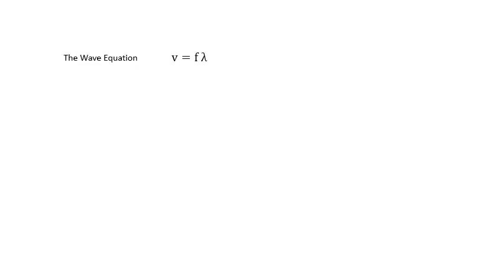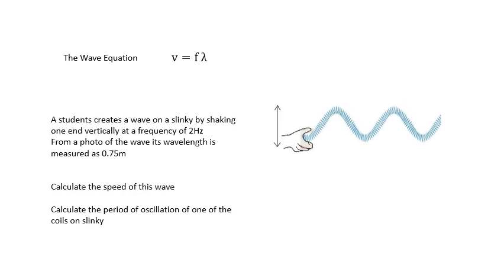The other important equation from GCSE: V equals Fλ. If we're talking about electromagnetic waves, the specification actually uses C equals Fλ for electromagnetic waves traveling in a vacuum. But generally, velocity equals frequency times wavelength. Have a go at this question yourself. Using V equals Fλ to get the speed, and then the period is 1 over the frequency — giving 0.5 seconds.